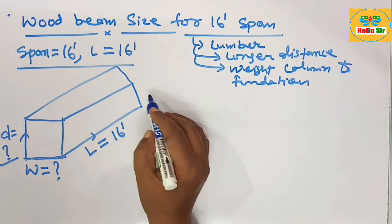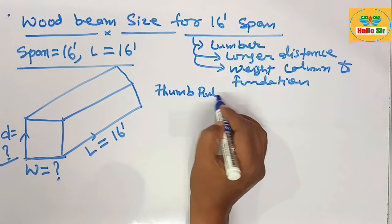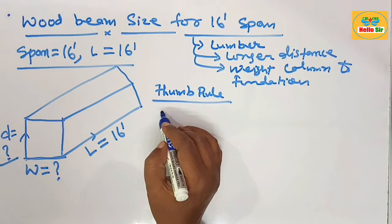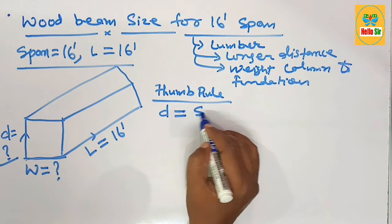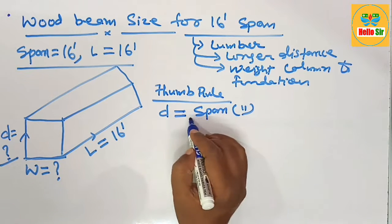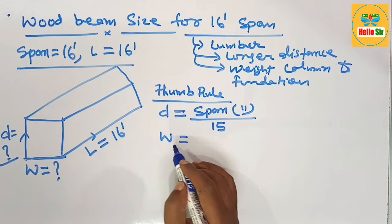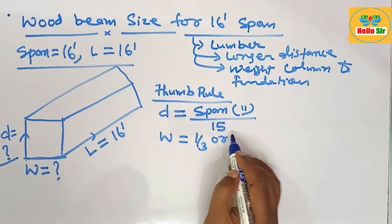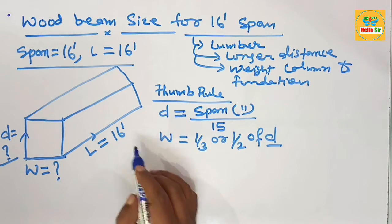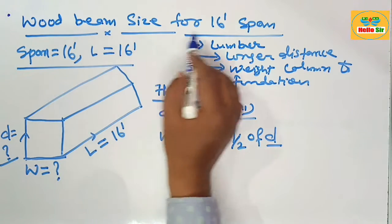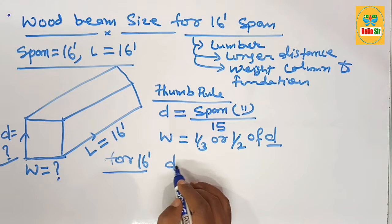We calculate wood beam size for a 16-foot span according to the thumb rule. The thumb rule for sizing a wood beam: the depth section of the beam equals the span in inches divided by 15, and the width section of the beam is one-third of the depth section.